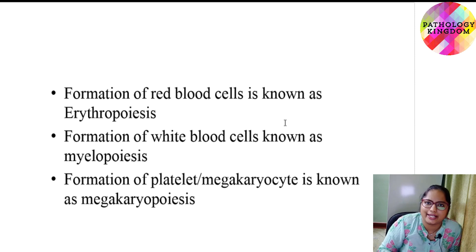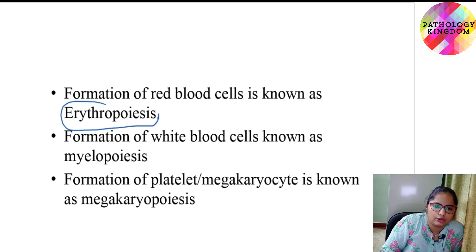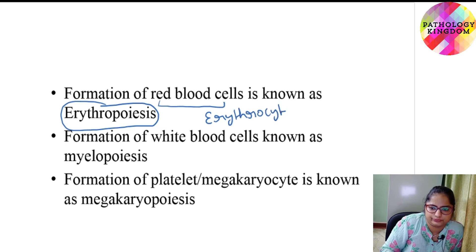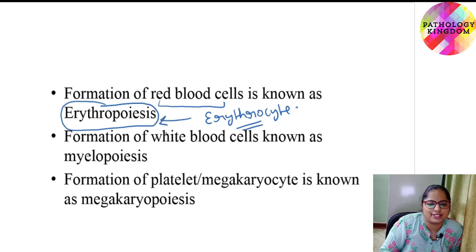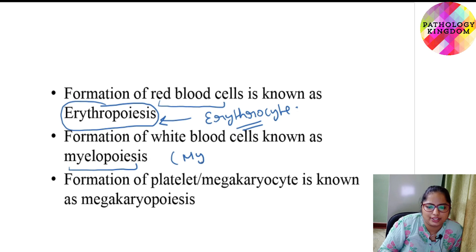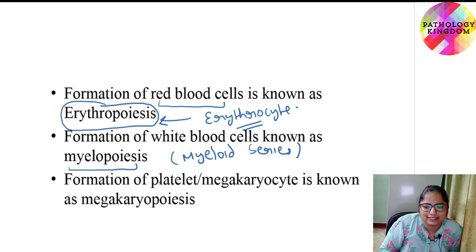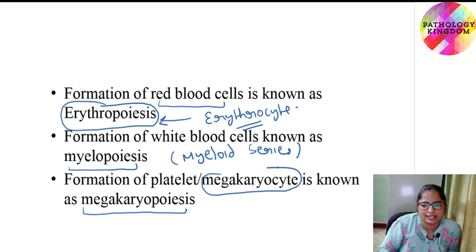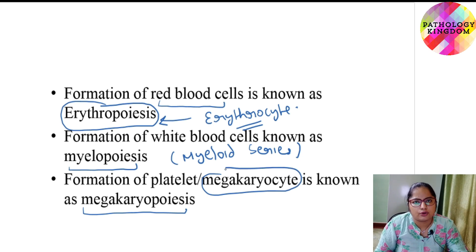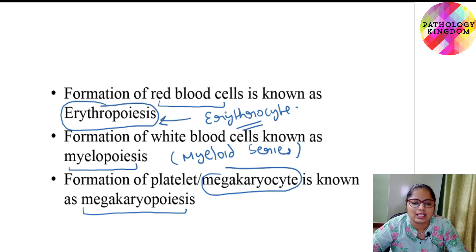Formation of red blood cells is known as erythropoiesis, because red blood cells are also known as erythrocytes. Formation of white blood cells is known as myelopoiesis, because they are also known as the myeloid series. Formation of platelets or megakaryocytes is known as megakaryopoiesis.